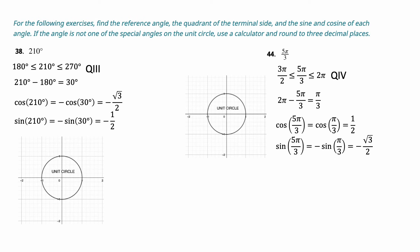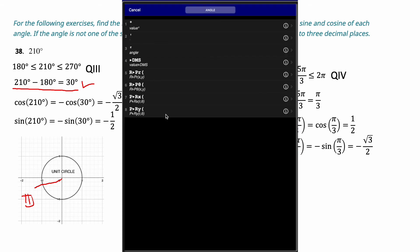For the following exercises, find the reference angle, the quadrant of the terminal side, and the sine and cosine of each angle. If the angles are not special angles of the unit circle, use a calculator and round to three decimals. The first one is 210. Since 210 is between 180 and 270, it's in the third quadrant — so both sine and cosine are negative. The reference angle is 210 − 180 = 30. Cosine of 210 is negative cosine of 30, which is −√3/2. Sine of 210 is also negative, so it's negative sine of 30, which is −1/2.